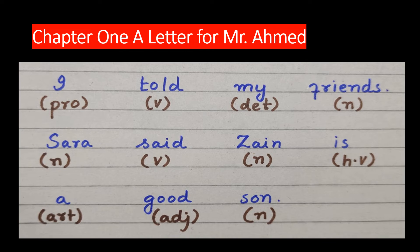Here, I is the pronoun, told is the verb, my is determiner, friends is noun, Sarah is again noun, said is the verb, Zain is again noun, is is helping verb, a is an article and good is adjective. Son is again noun.